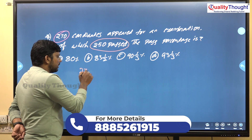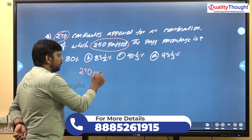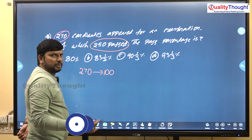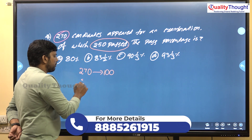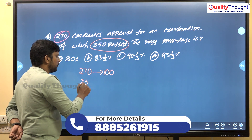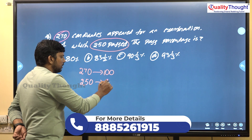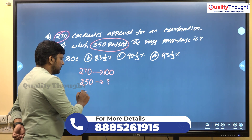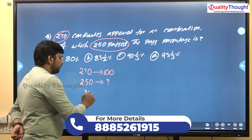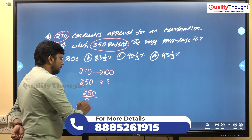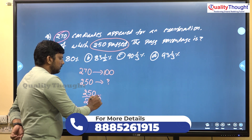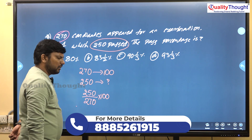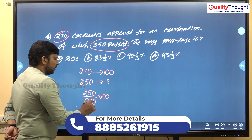Here 270 members equals 100%. So 250 members equals how much? This is the regular method — cross multiply. So: 250 divided by 270 into 100.